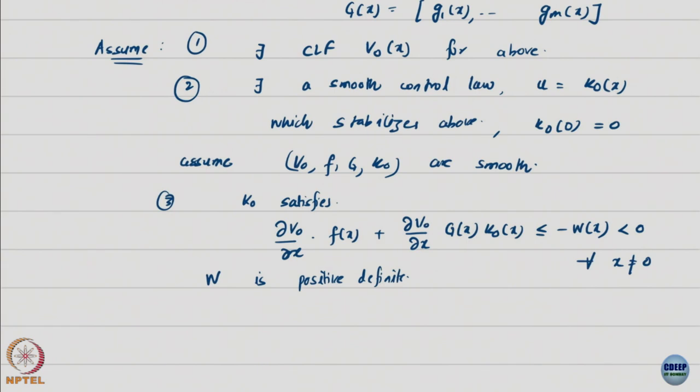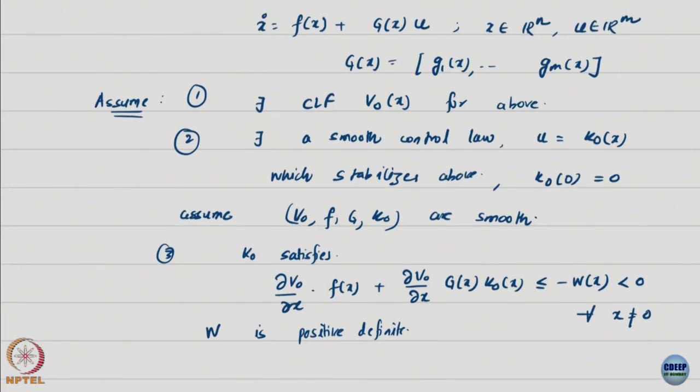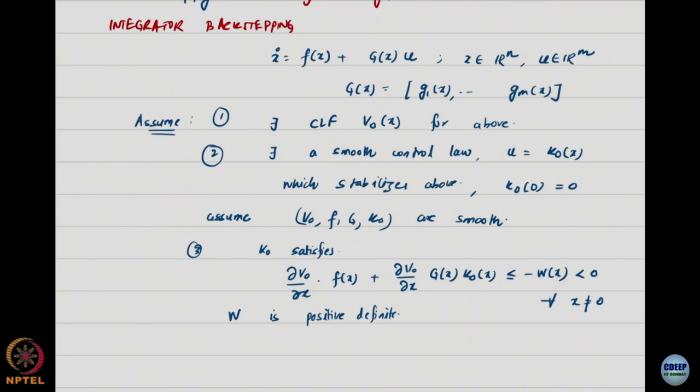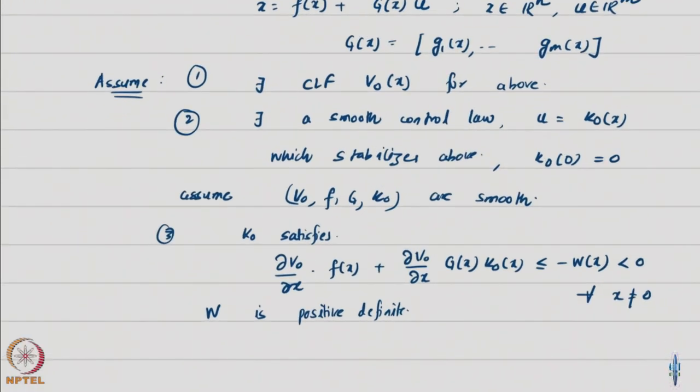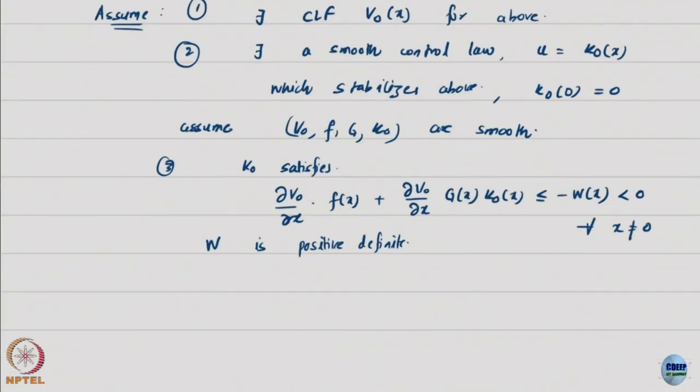Three: k0(0) equals 0, and k0 satisfies del v0/del x times [f(x) + g(x)k0(x)] is less than or equal to minus w(x), where w is positive definite. I'm specifying the third point because I'm saying that with this control, this negative definiteness is obtained. With v0 itself, using the universal controller, I can obtain k0, and then this is anyway obvious.